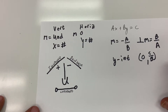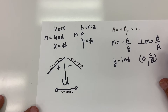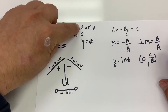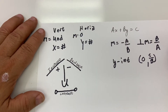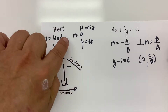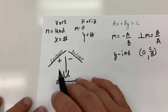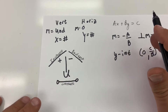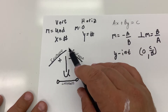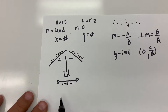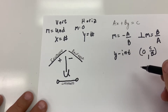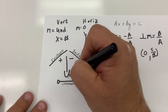If they ask what's the slope of a vertical line, it is undefined. If they ask what the slope of a horizontal line is, the slope is zero. If they ask you what the slope of y equals 17 is, that's a horizontal line — slope is zero. Increasing slope is positive, decreasing is negative. A constant slope is a horizontal line. A vertical slope is undefined.